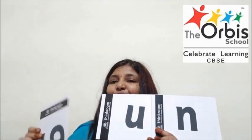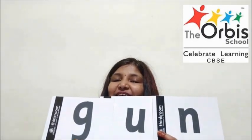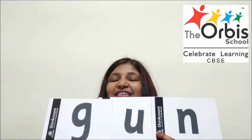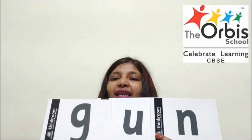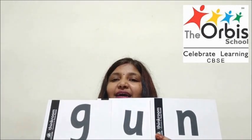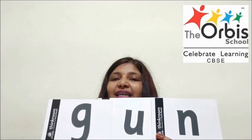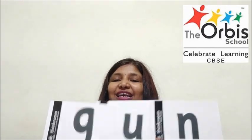And then we have a g. The sound of g is gu. So it is gu un gun. So we have seen a few words with un. We will see the meaning and the sentences of these words.